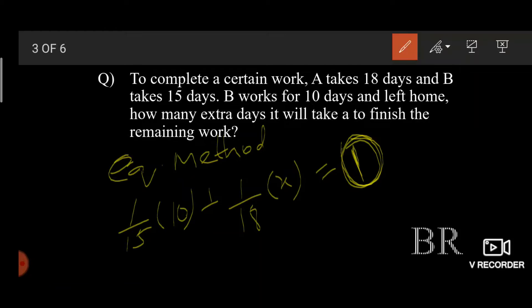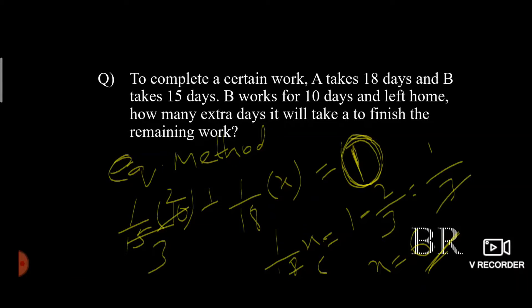So when you solve this equation, you get 1 by 18x is equal to 1 minus 2 by 3, which gives us 1 by 3. Hence x is equal to 6, which is our final answer. So these are the 3 methods and you can choose the one you are familiar with.